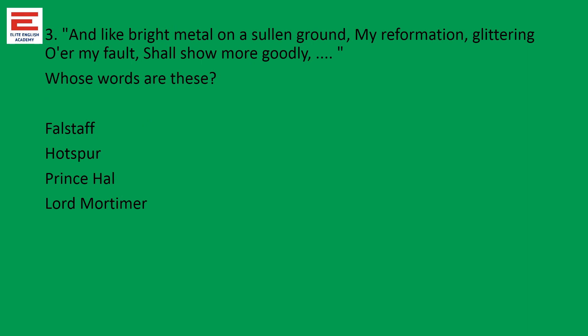Question three: 'And like bright metal on a sullen ground, my reformation glittering over my fault shall show more goodly.' Whose words are these? From the description itself, someone is regretting. It is from Henry the Fourth, Part One — it is by Prince Hal. Prince Hal is the person who was making fun with his friends like Falstaff, whereas when the duty calls him, he realizes the mistake and he regrets. In 2019 also, on a similar occasion only a question was asked. So the part about Prince Hal's transformation is very, very important.